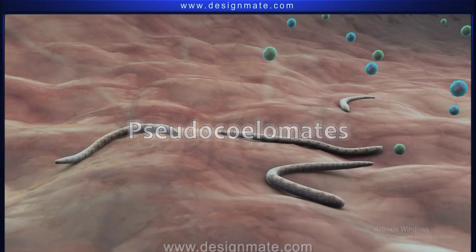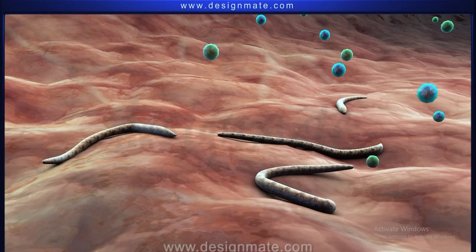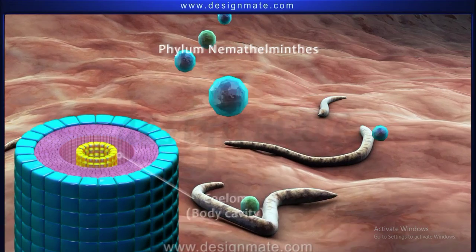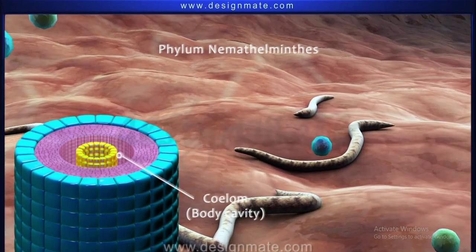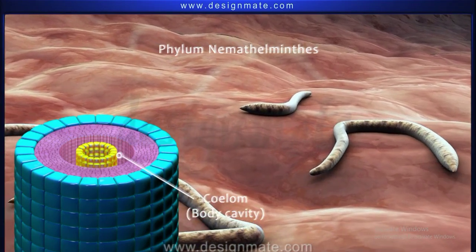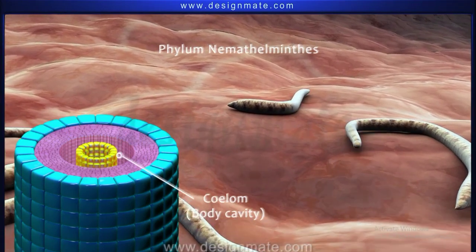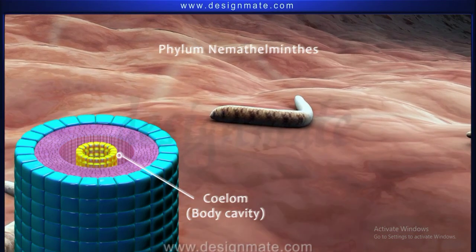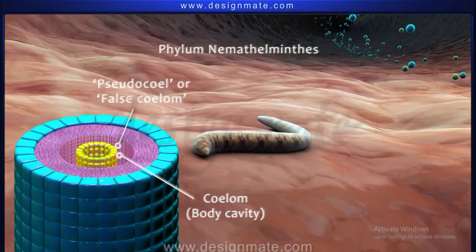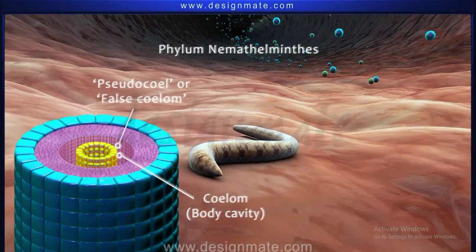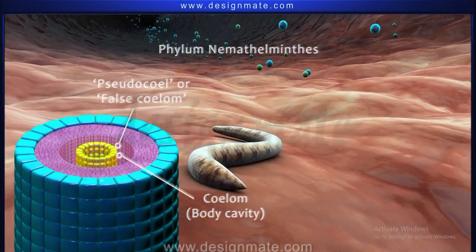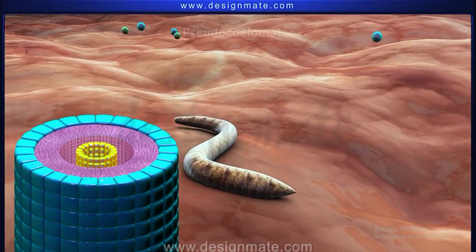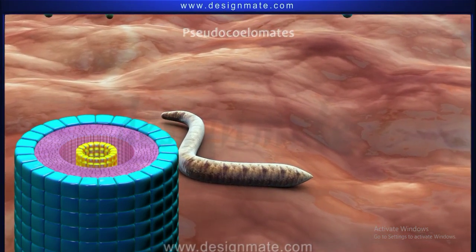Pseudocoelomates. In members of Phylum Nematoda, the body cavity or coelom is not lined by a peritoneal layer. The coelom in such cases is called Pseudocoelom or False Coelom. Such organisms are called Pseudocoelomates.